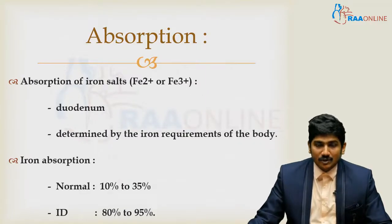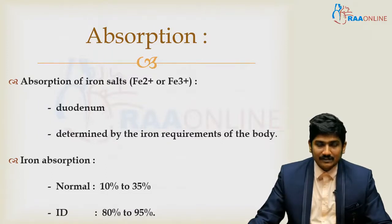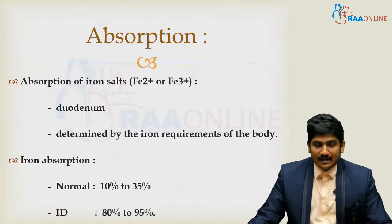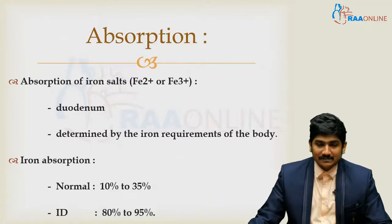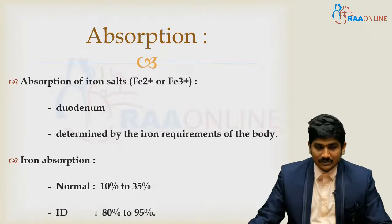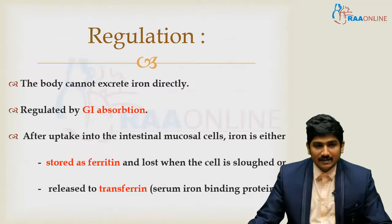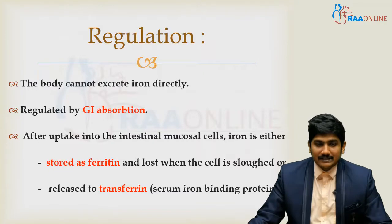Absorption of iron salts happens at the level of the duodenum and is determined by the iron requirements of the body. Iron absorption in an otherwise normal individual is around 10 to 35 percent of what is consumed orally. But in iron deficiency, up to 80 to 95 percent of consumed iron is absorbed. The body cannot excrete iron directly; rather, it regulates through gastrointestinal absorption.